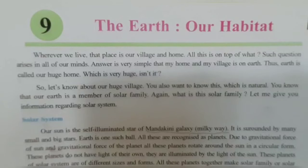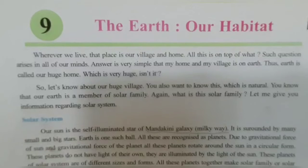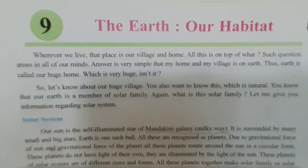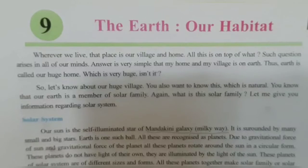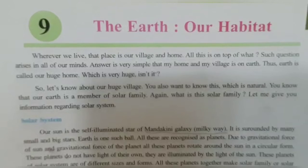Among all longitudes, the zero degree and 180 degree longitudes are important. Equator: An equator is an imaginary line around the middle of the earth. It is halfway between the north and south poles at zero degree. It divides the earth into a northern hemisphere and a southern hemisphere.